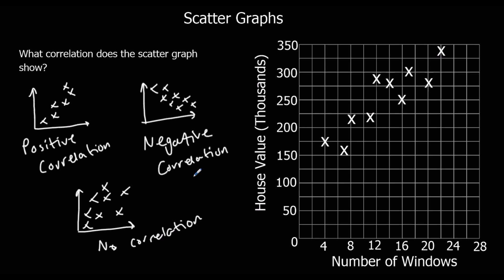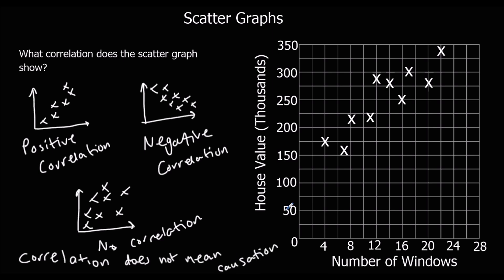As the number of windows increases, the house value also increases. It's important to note though that just because there's a correlation, it doesn't mean there's causation. Correlation does not mean causation. Just because there's a pattern where the number of windows goes up and the house value goes up, it doesn't mean the number of windows causes the house value to go up. If I decided to put ten new windows in the same house thinking that would increase the house value, it would probably look silly and it probably won't. Correlation does not mean causation — it just means that there's a relationship there.